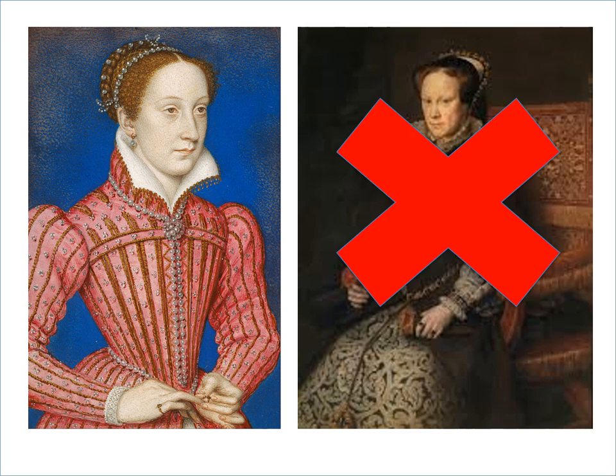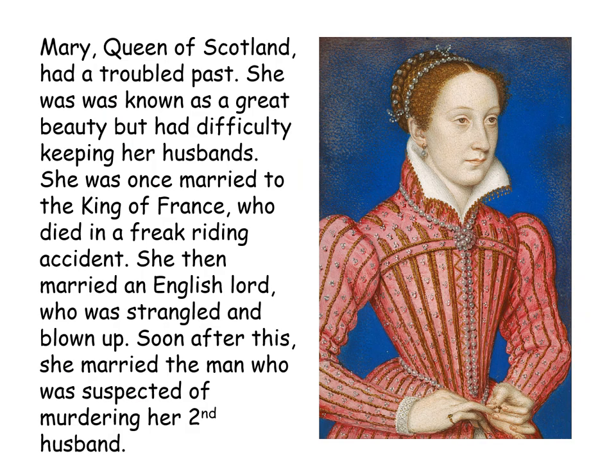Mary Queen of Scots was Elizabeth's cousin, while Mary Tudor was Elizabeth's older sister. Mary Queen of Scots had a troubled past. She was known as a great beauty but had difficulty keeping her husbands, mainly because they kept dying. She was once married to the King of France, who died in a freak riding accident. She then married an English lord who was strangled and blown up — just to make sure. Soon after this, she married the man who was suspected of murdering her second husband.